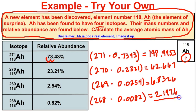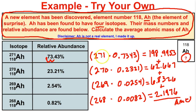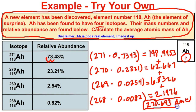So now what do we do? We add all four of these masses together — and this will be in atomic mass units. Adding all of these up, we end up with 270.693 AMUs — atomic mass units.